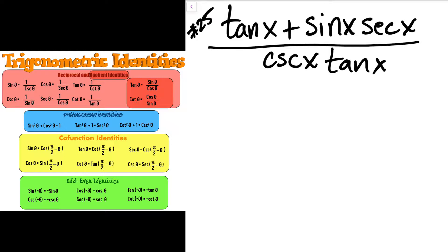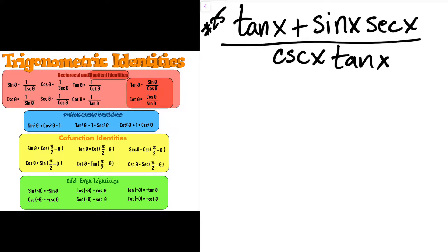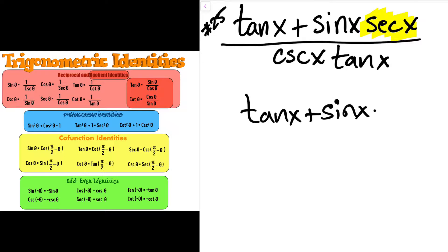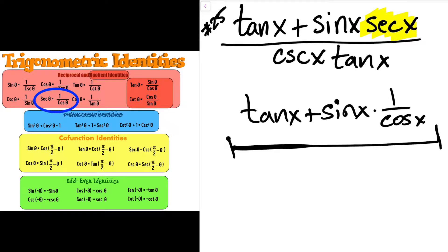I'm going to scan this problem carefully and see where I can simplify. The thing that catches my eye first is this secant here. That can simplify into tangent x plus sine x times 1 over cosine x. That 1 over cosine x is a reciprocal identity.